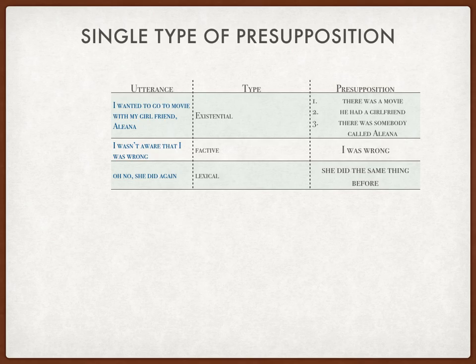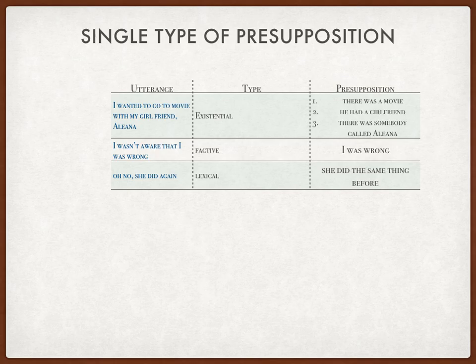The third sentence is: 'Oh no, she did it again.' This sentence contains the lexical indicator word 'again,' which shows a repeating action. The presupposition is simply: she did the same thing before. As we know, with lexical presuppositions there are indicators like 'stopped,' 'started,' and similar words. For example, 'she started complaining' means she never complained before.